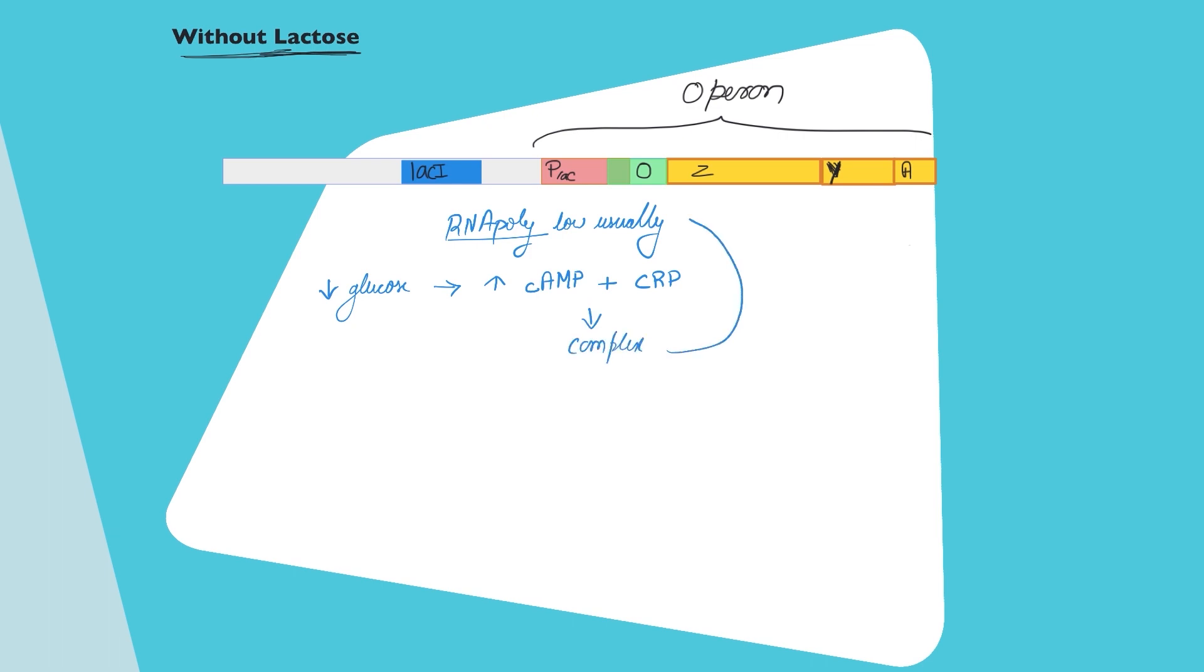This complex binds to the promoter region and increases the affinity for RNA polymerase. This actually makes sense because if the concentration of glucose is low, I am telling my operon to act faster to allow more affinity for RNA polymerase and hence transcribe the genes so that lactose can be used if it is available in the surrounding.